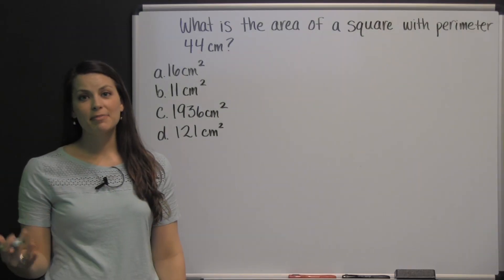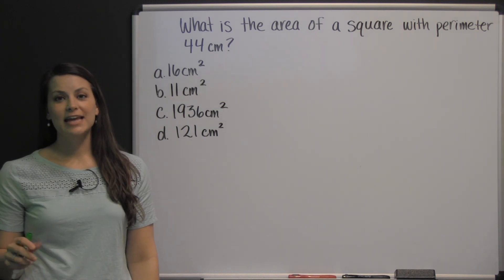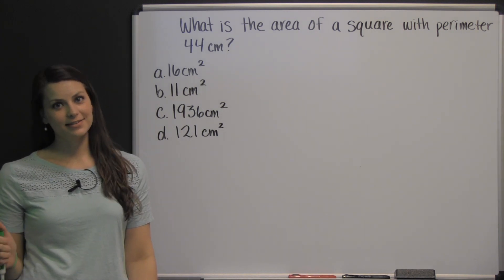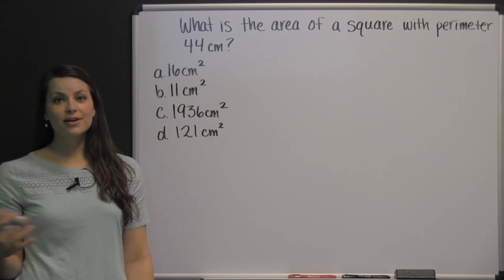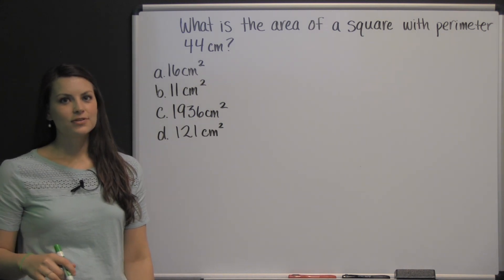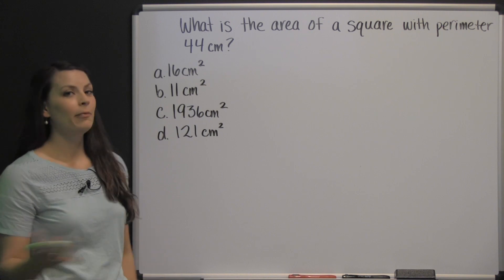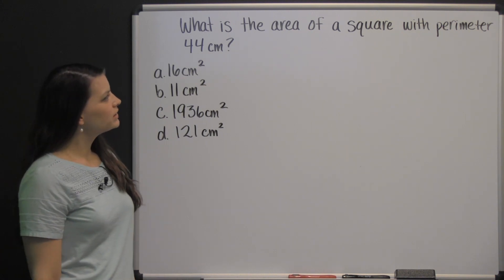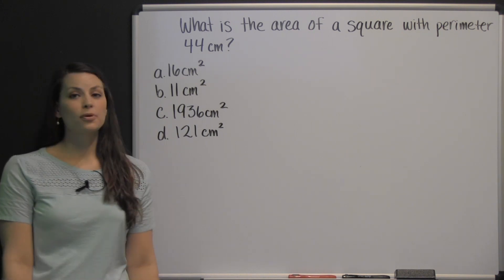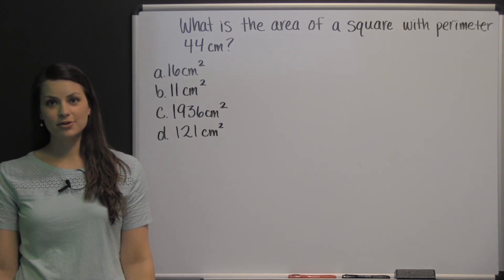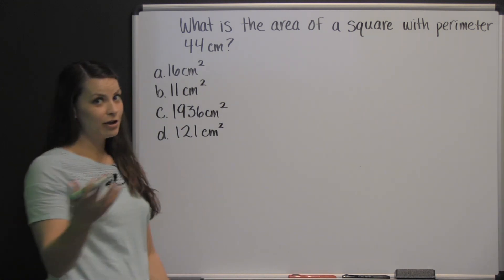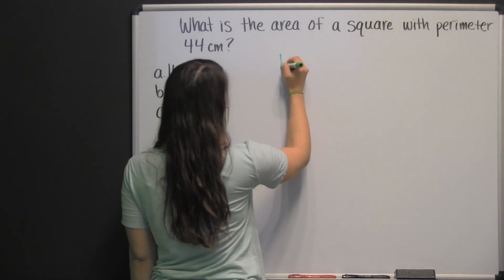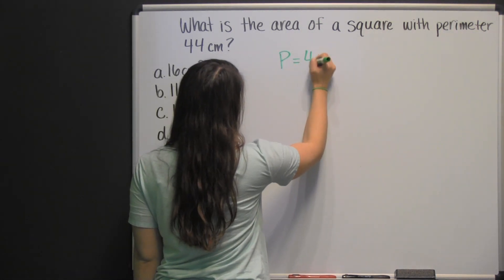Here's a question from the mathematics section of the HSPT practice test. On the HSPT exam, you are not allowed to use a calculator, so we're going to work on working this problem without one. What is the area of a square with perimeter 44 centimeters? We're going to start with what we know, which is that the perimeter of the square is 44 centimeters.